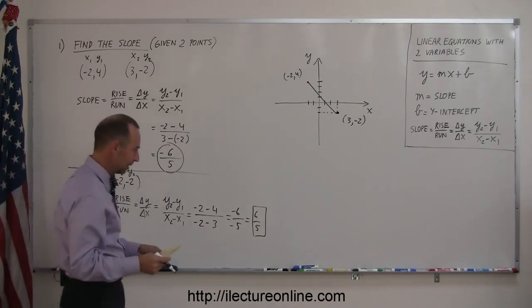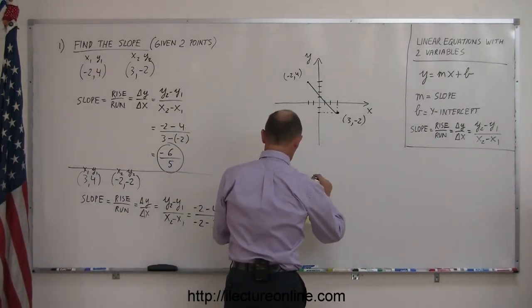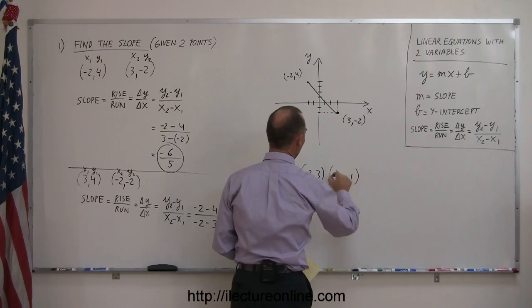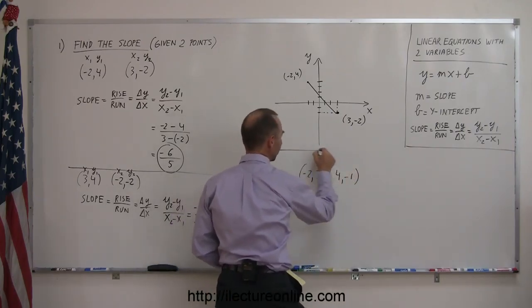One more example. These aren't so bad. We have negative 2 comma 3 and 4 comma 1, or let's make it negative 1. All right, so here's the third point.